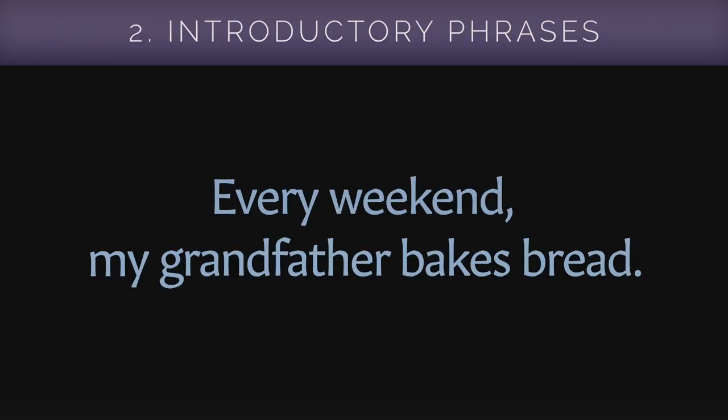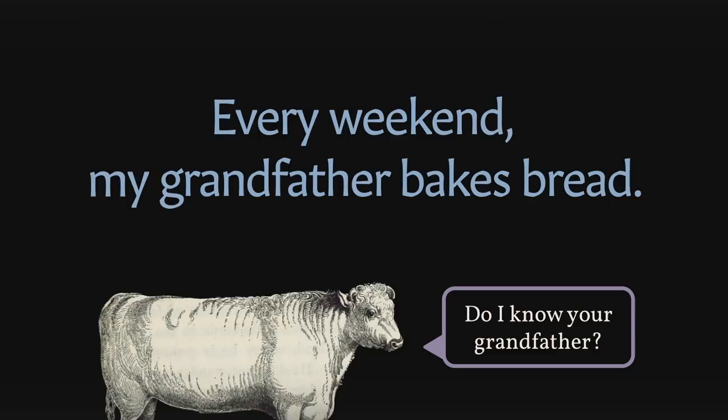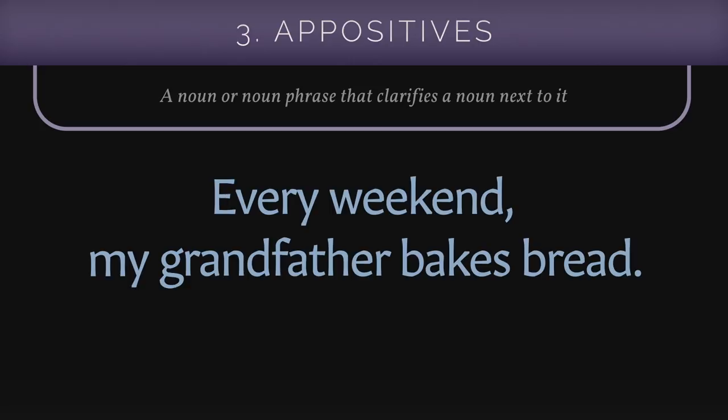What if you also want to include the name of your grandfather to make sure the reader knows who he is? You can use an appositive, which is a noun or noun phrase that clarifies a noun immediately next to it. Right after "grandfather," include his name, but surround it in commas. Commas must always surround an appositive.